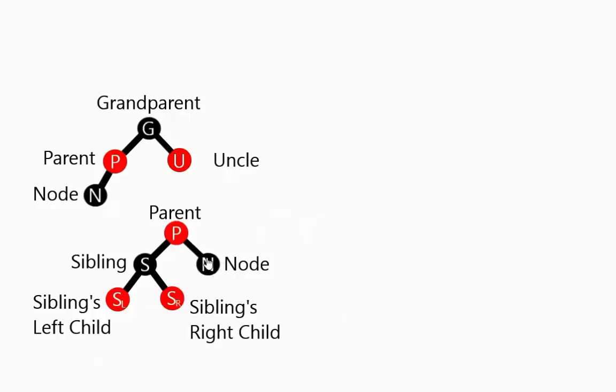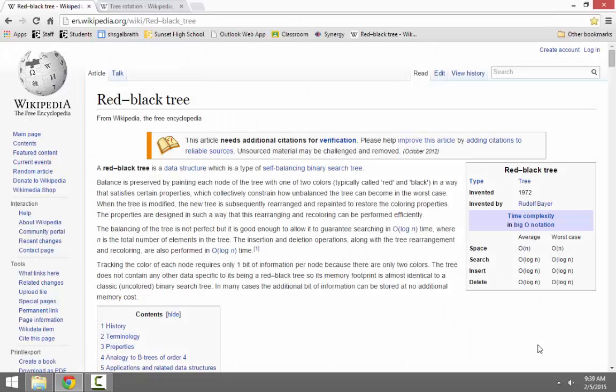Also, if you look at a particular node, the sibling is the other child of the parent. So if you're a right, it's the left child. If you're a left, it's the right child. And we end up worrying about the sibling's left and right children as well.